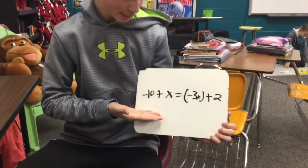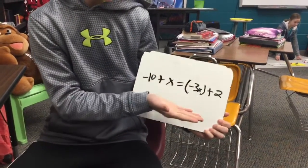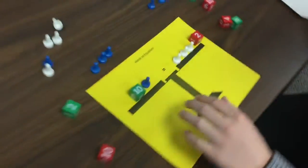Our next problem is negative 10 plus x equals the opposite of 3x plus 2. Here we have it.